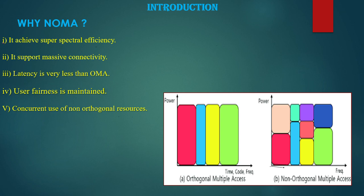In this diagram you can see that within one part of the frequency spectrum we are serving user 1 and user 2, sending more data by accommodating two users here, so spectral efficiency increases. Massive connectivity is also achieved because we are accommodating more users in the same time-frequency resource. Latency is less because all users are being served simultaneously in the same time-frequency resource — they don't have to wait for their resources.